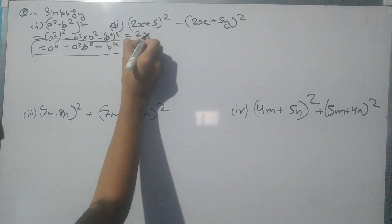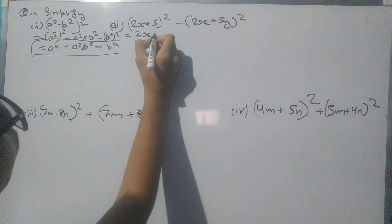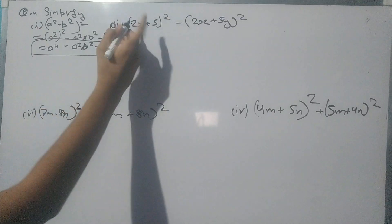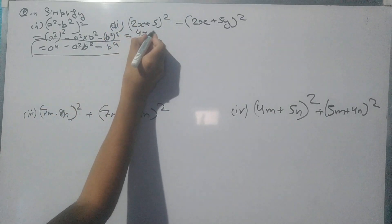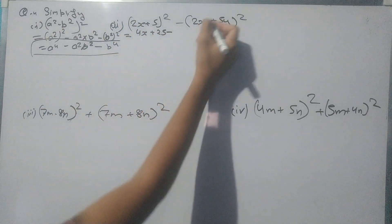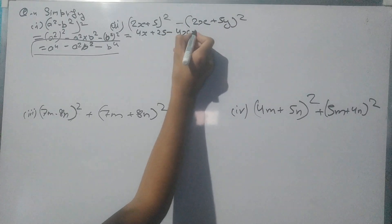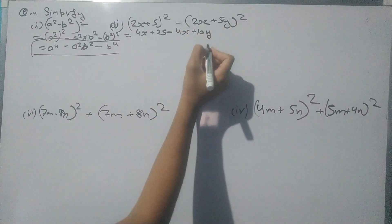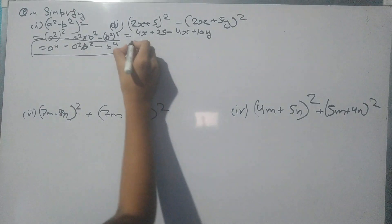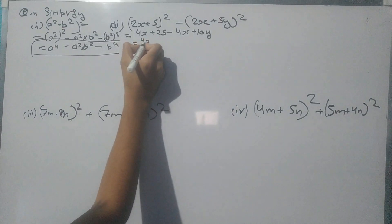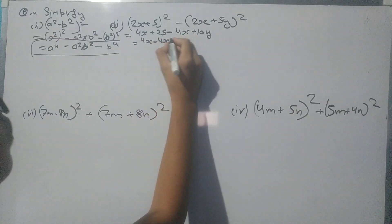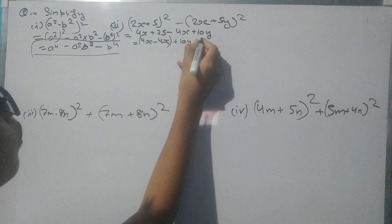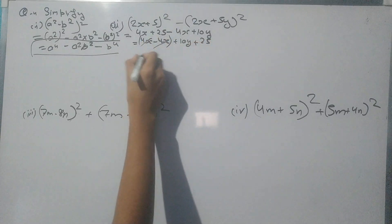Minus (2x + 5)². If we open the bracket we will get 4x² + 25 minus, so 4x plus 10x, 4x minus 4x plus 10x plus 25.